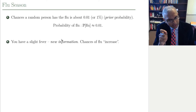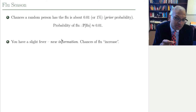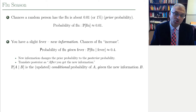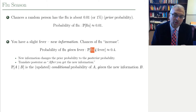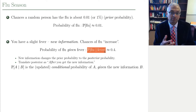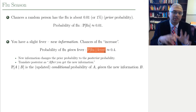But now, suppose I come to your house and find out you have a slight fever. This is new information. Before, you were just a random person — but now you're a random person who has a slight fever, and that additional information increases the chances of a flu. We say the probability of flu given the fever has now gone much higher, maybe about 40% or 0.4. This new information changes the probability into what we call a conditional probability, or sometimes a posterior probability — the updated probability of flu given the new information that you have a fever.